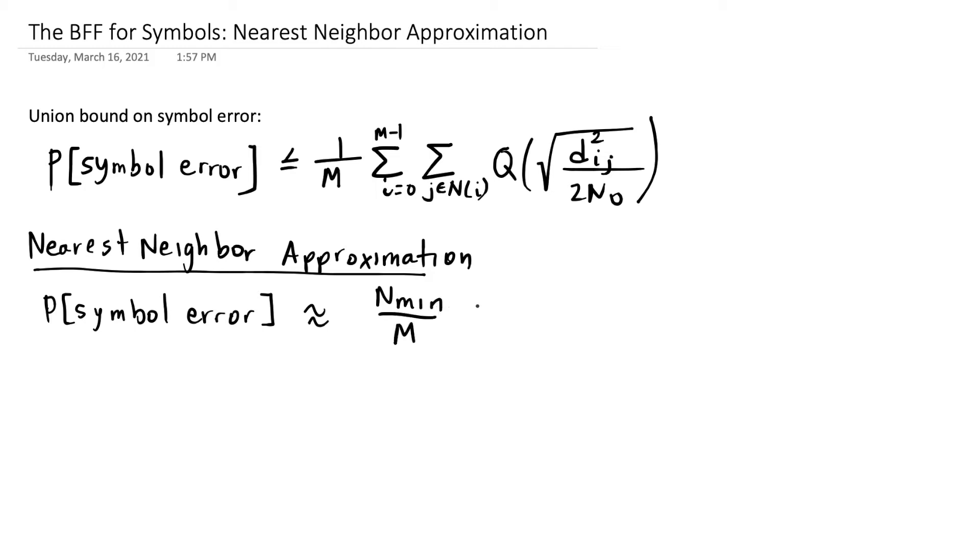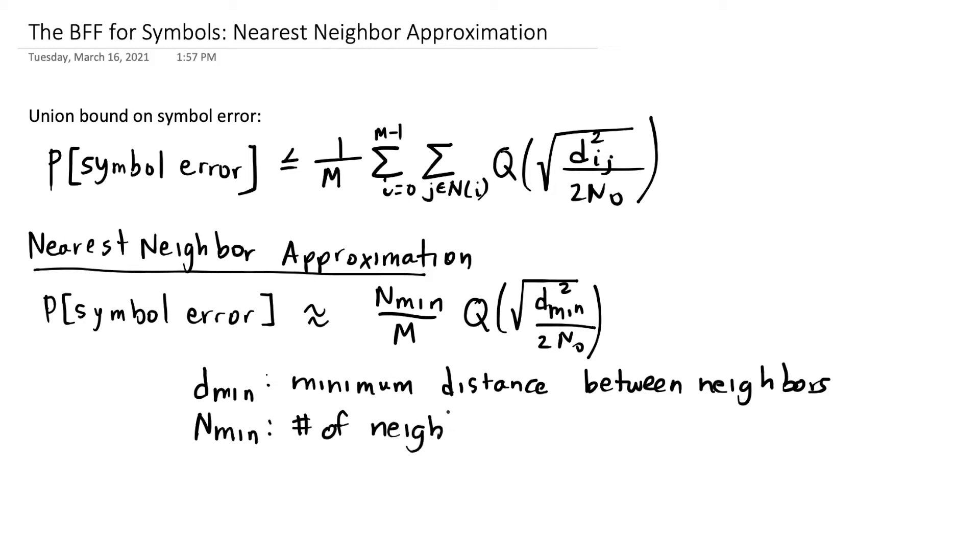The nearest neighbor approximation just looks at the minimum distance in a constellation, dmin, and nmin is the number of neighbors that have that distance separating them.